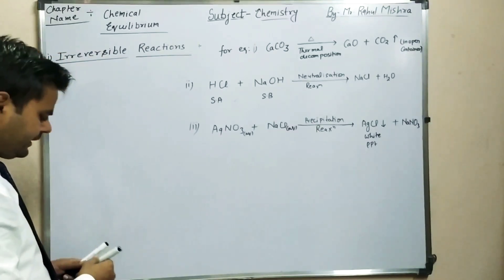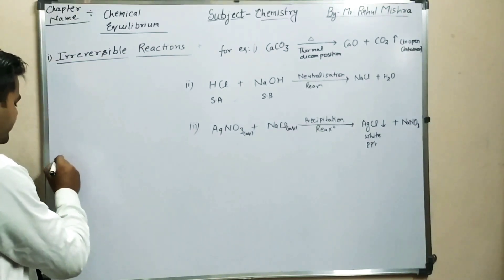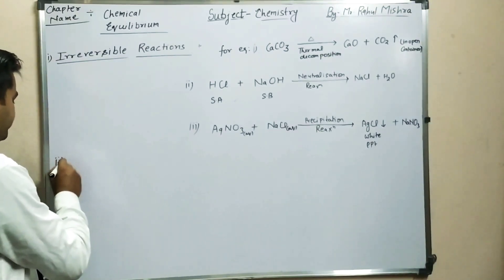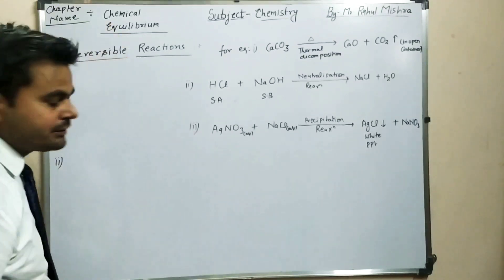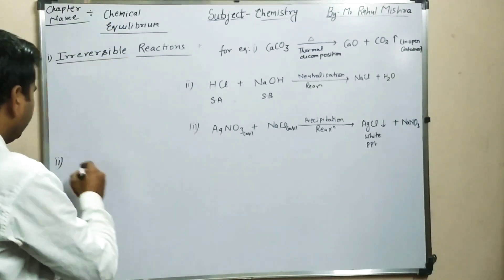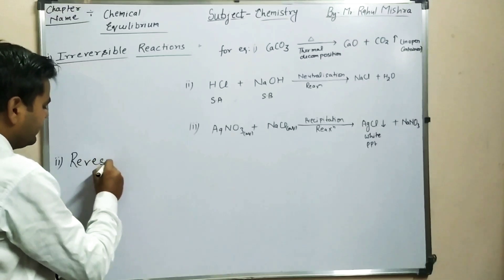Now we will discuss reversible reactions, which is the second type of reaction and is very important for the Chemical Equilibrium chapter.